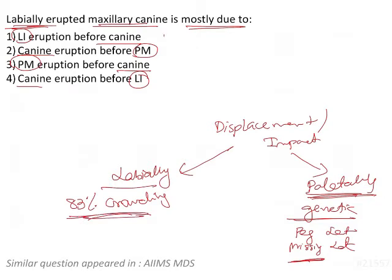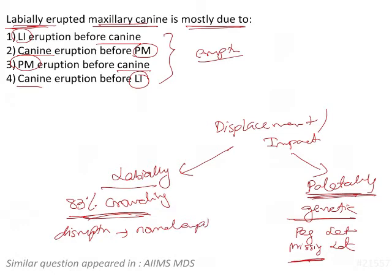Looking at the answer options, all of them mention eruption sequence. Whenever there is a disruption in the normal eruption pattern or any abnormality in the eruption sequence, this could lead to crowding, which will displace the canine labially.